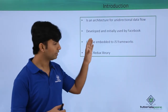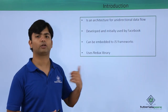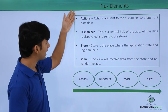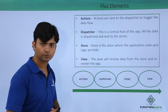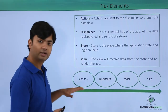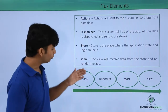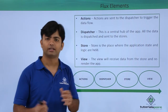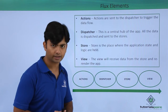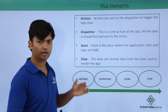Now let's talk about the elements of Flux — how it works. There are four major components: action, dispatcher, store, and views. The flow of data is unidirectional, going from action towards the view. Action, as the name says, is a request that asks the dispatcher to dispatch the data. Actions are sent to the dispatcher to trigger the data flow.